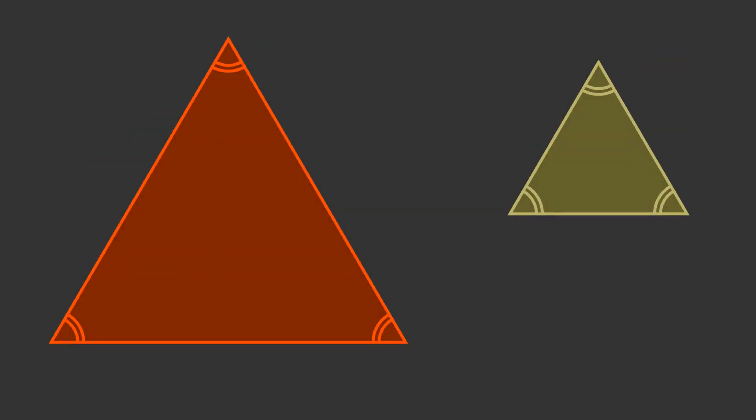We will look at a few examples of similar triangles. The first example is equilateral triangles. All equilateral triangles are similar. This is because they all have three angles of 60 degrees, so they are all similar by the AA rule.